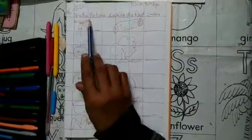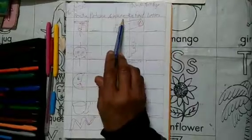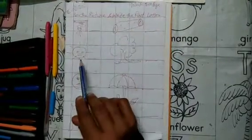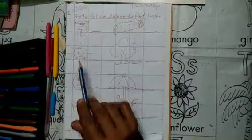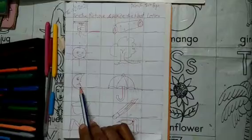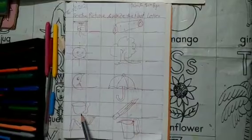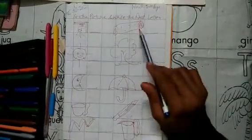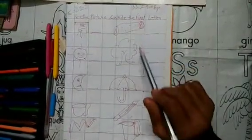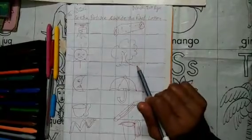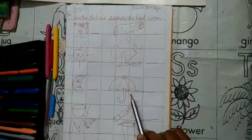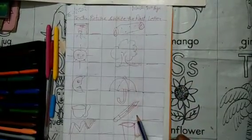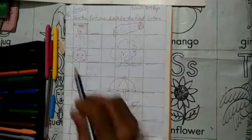See the picture and write the first letter. T for tap, S for sun, M for moon, C for cup, Z for zigzag, L for log, T for tree, U for umbrella, P for fancy, J for junk.